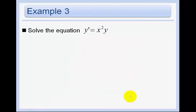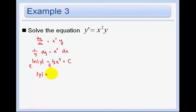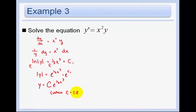Solve the equation y prime equals x squared y. We can rewrite this as dy/dx equals x squared y; put all the y stuff on the left and everything else on the right. The antiderivative of 1 over y is ln|y| equals one-third x cubed plus c. Taking e to both sides, we get |y| equals e to the one-third x cubed times e to the c. Calling this c1, we say y equals c e to the one-third x cubed, where c equals plus or minus e to the c1.